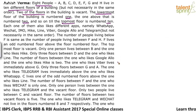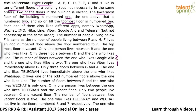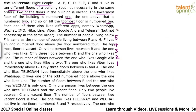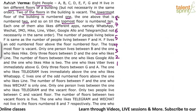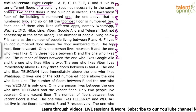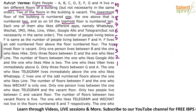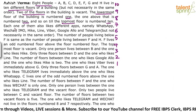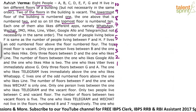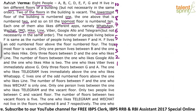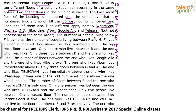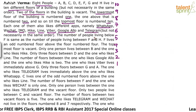Let's set up the 10 floors: one, two, three, four, five, six, seven, eight, nine and ten. Each person also likes a different messaging app: WhatsApp, WeChat, IMO, Hike, Line, Viber, Google Allo and Telegram, but not necessarily in the same order. We need to find out which person lives on which floor and which app they use.